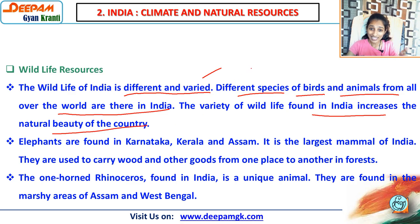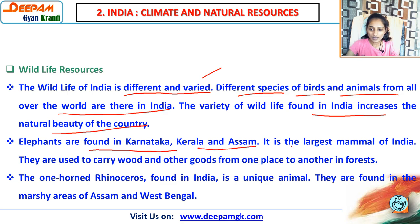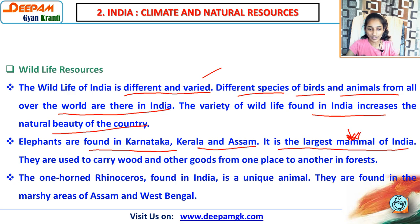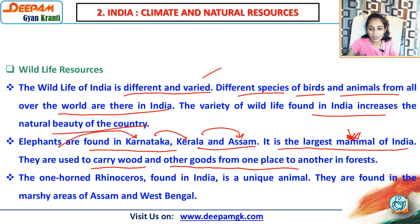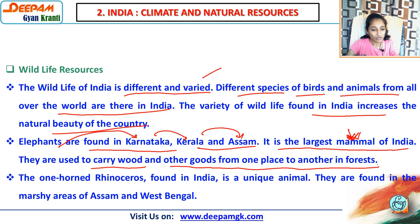For that we have national parks where birds and animals can live their life safely. Elephants are found in Karnataka, Kerala, and Assam. The elephant is the largest mammal of India. They are used to carry wood and other goods from one place to another in the forest — they are very heavy and huge in size.